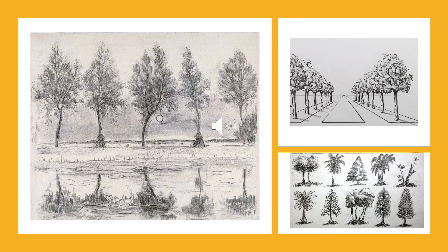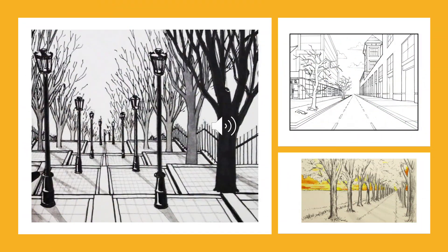Perspective is used to represent the way objects appear smaller as they move farther into the distance. It adds depth and dimension to flat images. In art there are three types of perspective: one point, two point, and three point, as you can see in these landscapes.